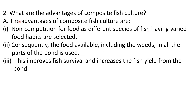Question number two: What are the advantages of composite fish culture? Composite fish culture is one in which different breeds of fish are farmed or cultivated in a given water body. The three main advantages are: one, non-competition for food, as different species of fish having varied food habits are selected — some fish feed at the top layers, some in the middle layer, some at the bottom.